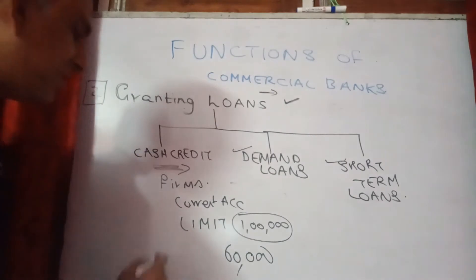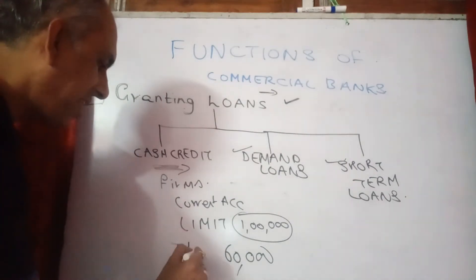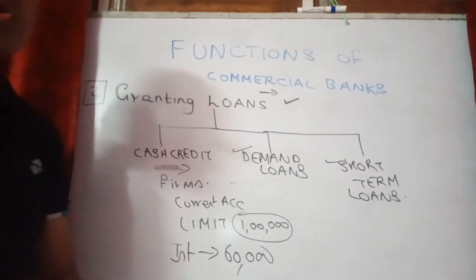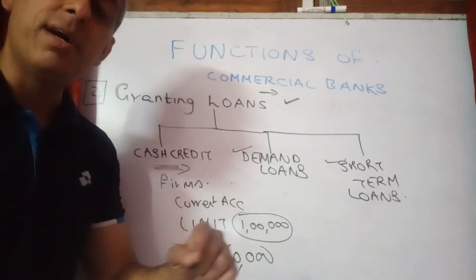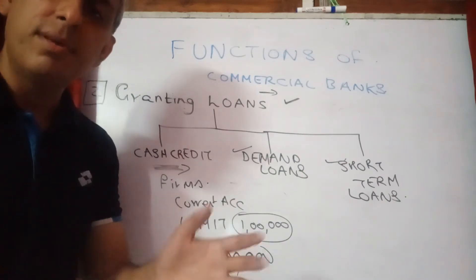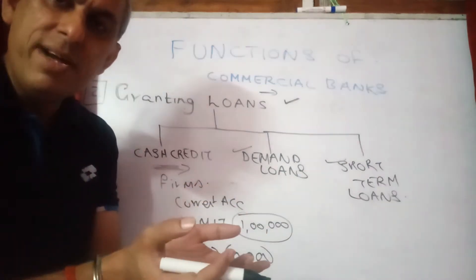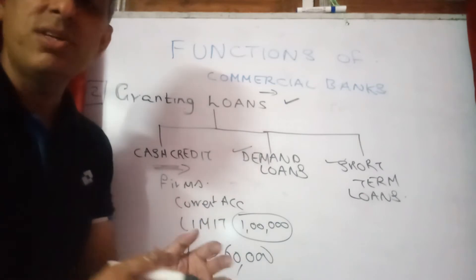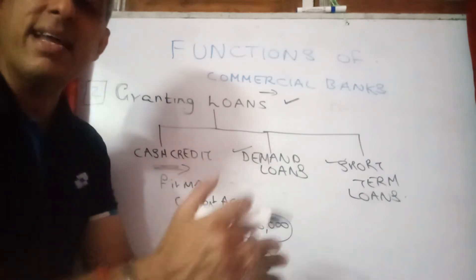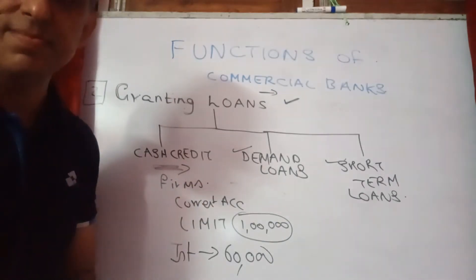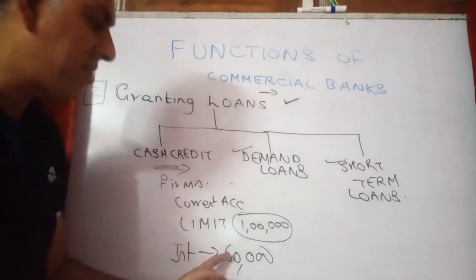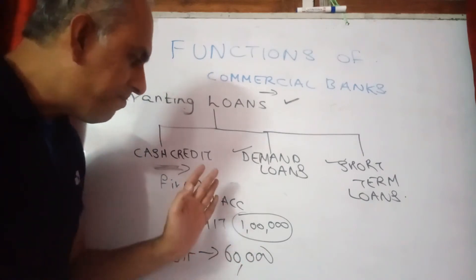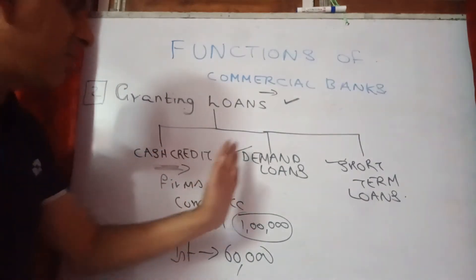On what amount is the interest charged? The interest is charged on the amount the firm has actually used — I am talking about 60,000 rupees, not on the entire sanctioned amount. So they will charge interest on 60,000 rupees. That's what cash credit is.